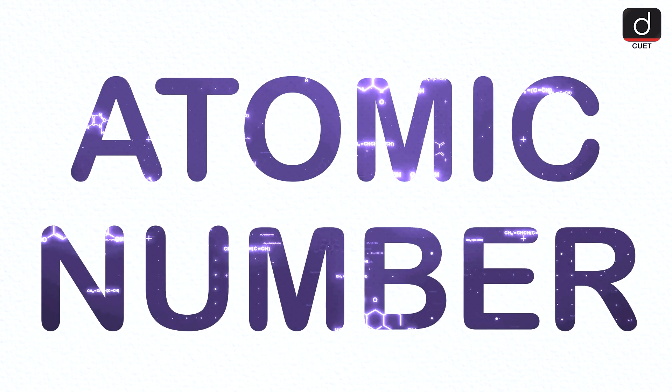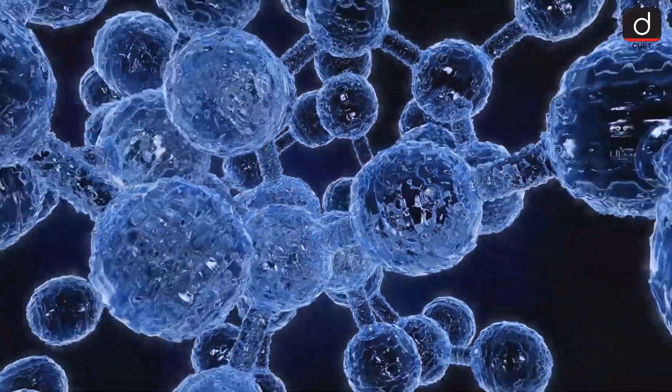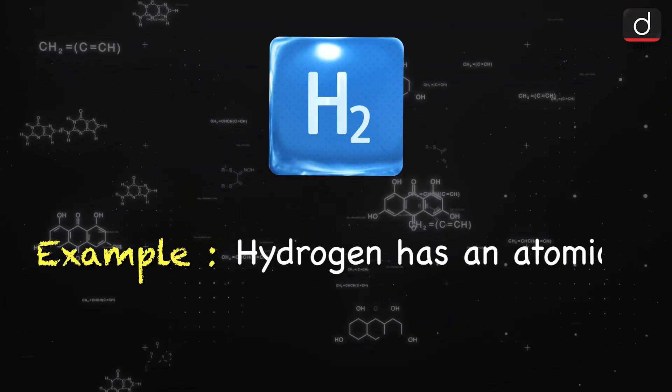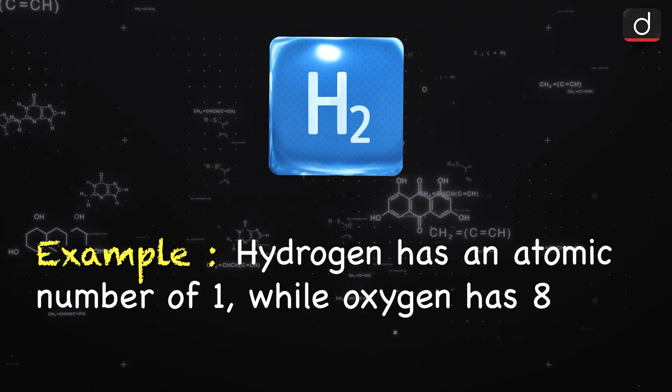Atomic number, mass number. 1. Atomic number. This is the number of protons in an atom. It's unique to each element. For example, hydrogen has an atomic number of 1, while oxygen has 8.